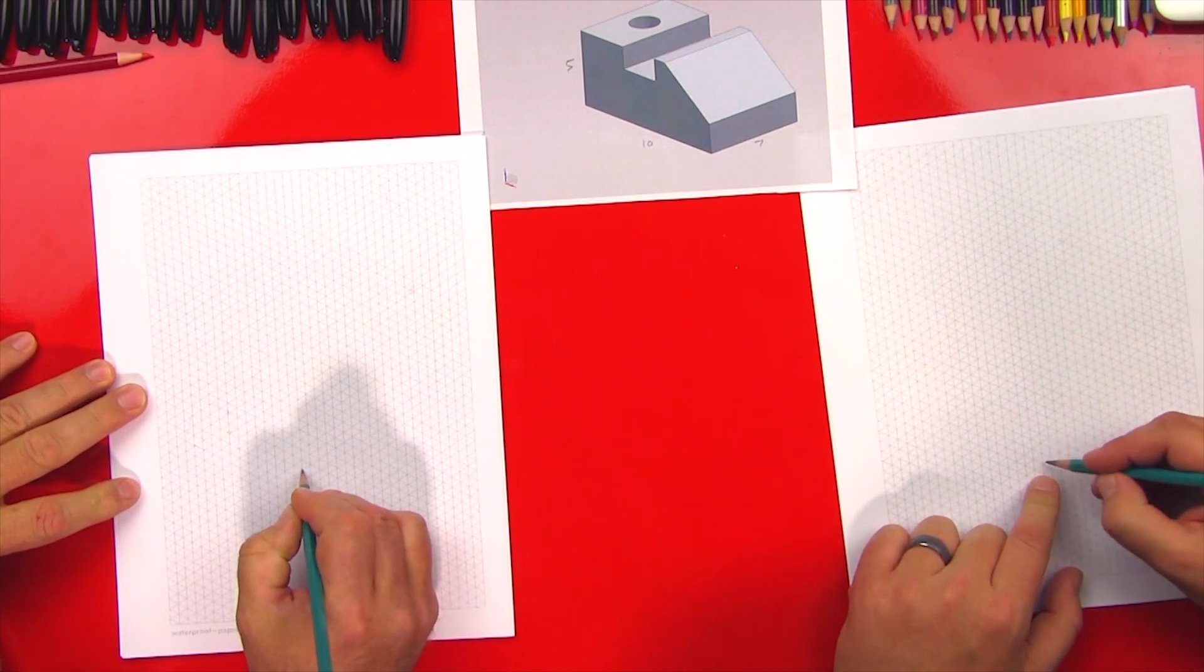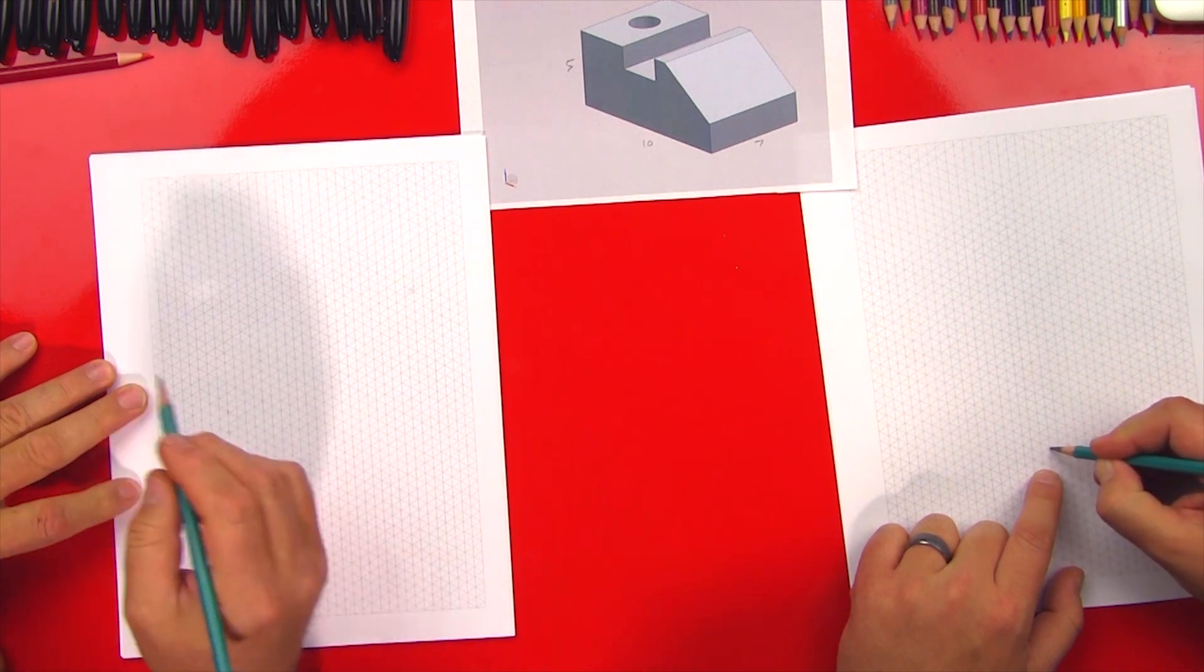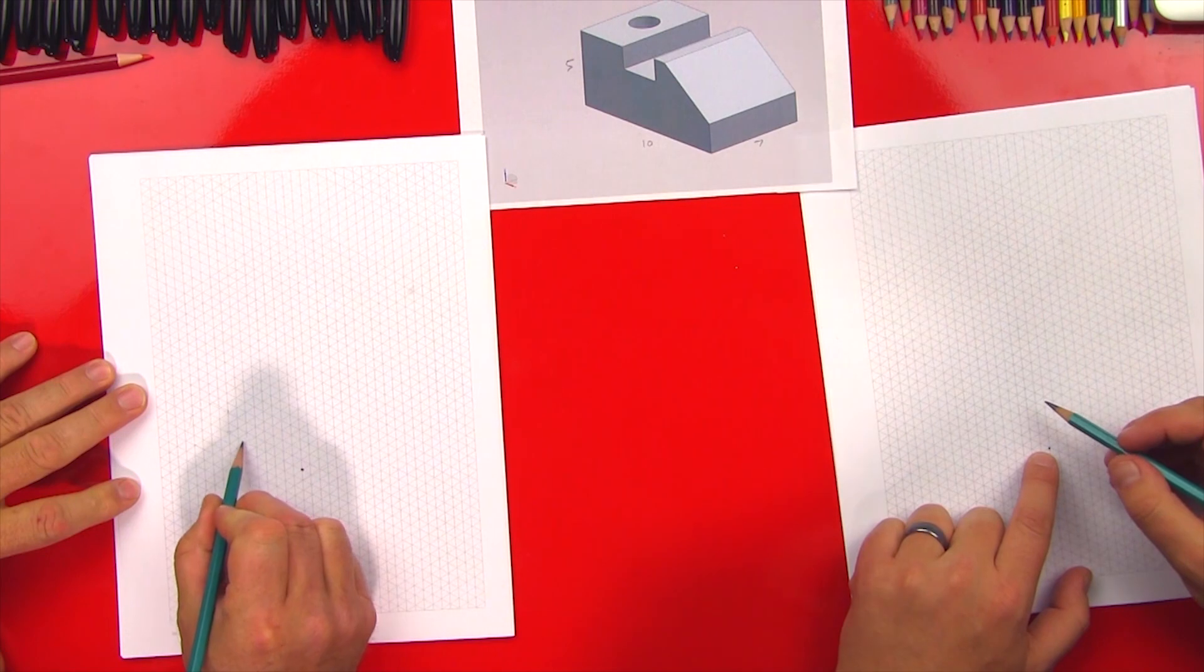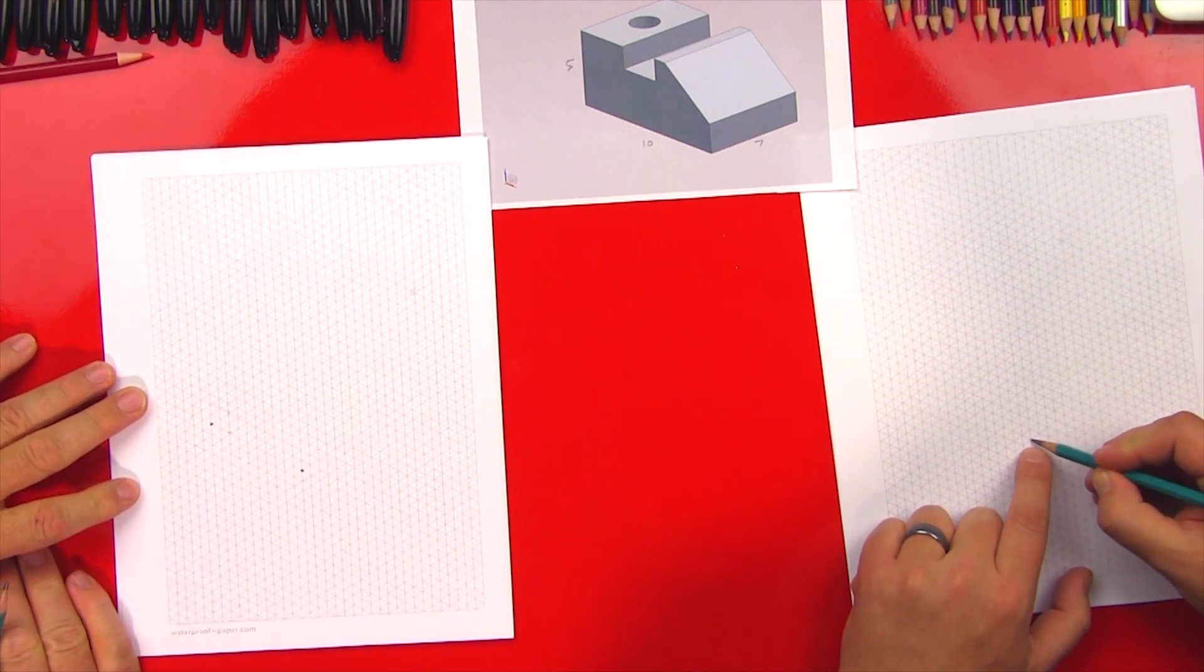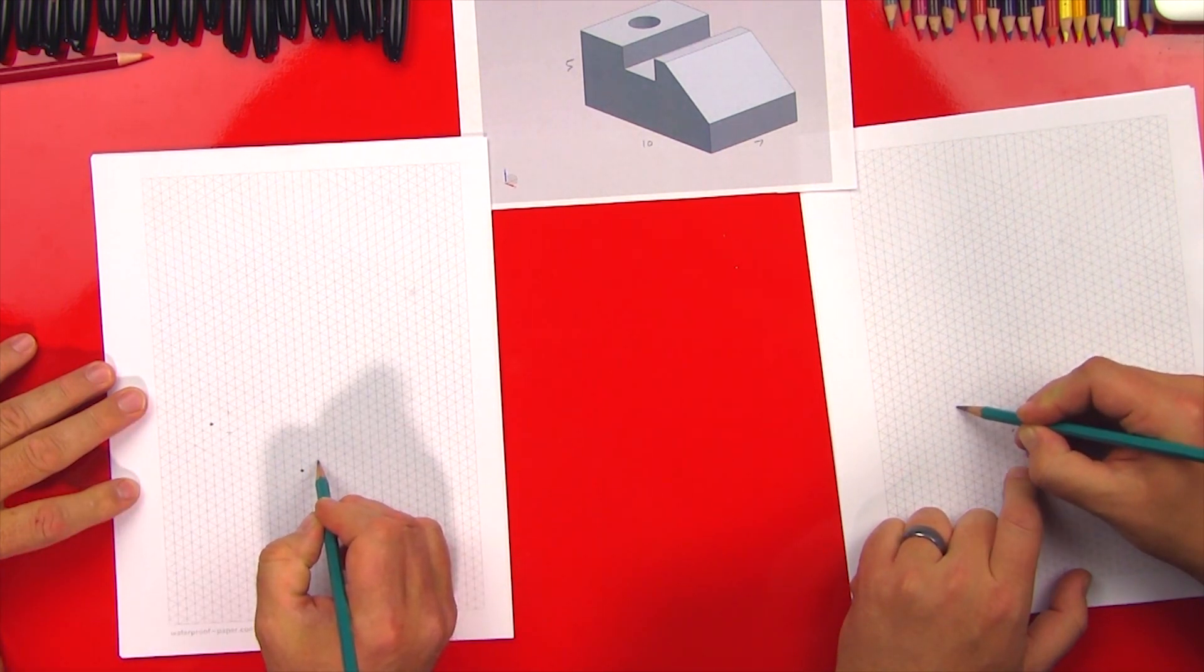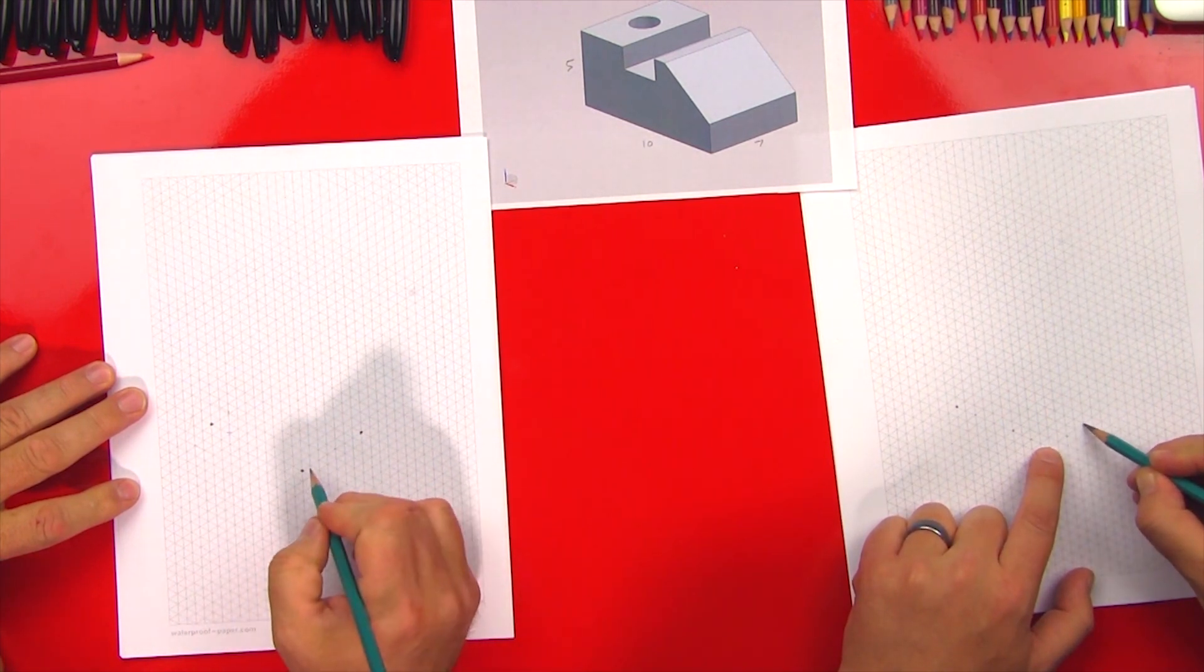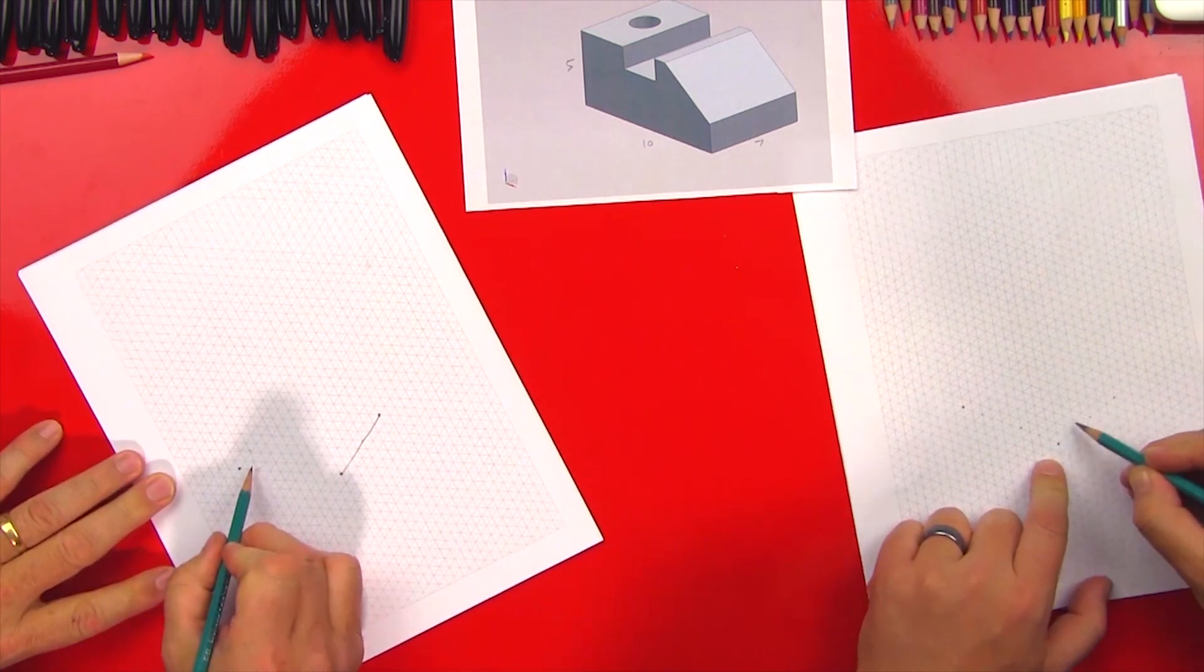Where do you start? How do you start? I just pick a lower front point. And then I just begin counting back. So there's two, four, six, eight, ten. So there's a depth of ten. And I'm going to count across the front. Two, four, six, seven.